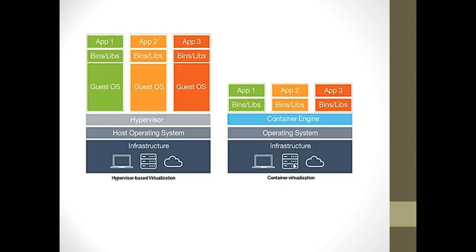In virtualization, we had the infrastructure — the CPU and all hardware equipment. Above that is the host operating system, whether Windows or any other OS. On that operating system we used to install a hypervisor like VMware Workstation or Oracle VirtualBox. Over that virtualization layer, called the hypervisor, we ran a number of virtual machines, also known as guest operating systems, which were responsible for running specific applications including their libraries and binaries.